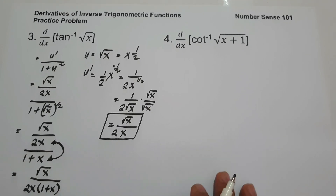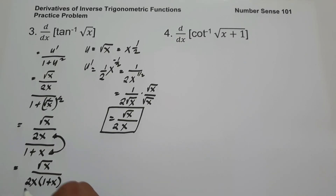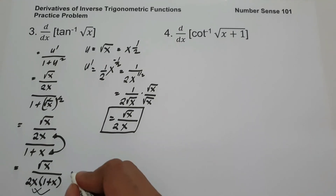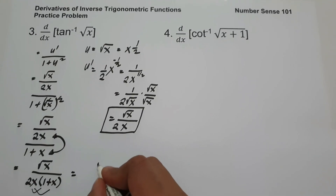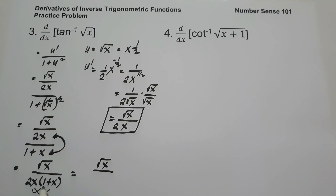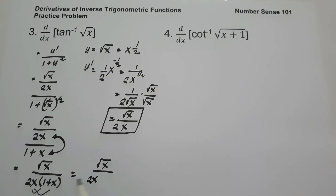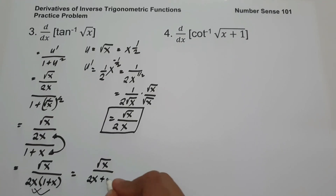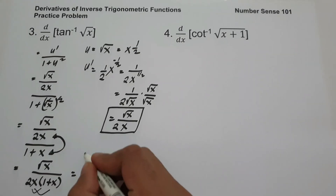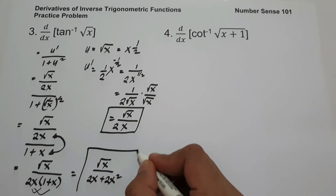So distributing, we multiply 2x by 1 plus x to get the denominator 2x plus 2x squared. So the final answer is square root of x over 2x plus 2x squared.